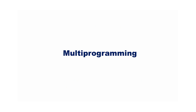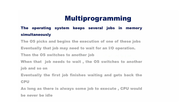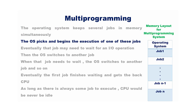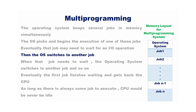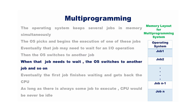Multiprogramming was introduced in order to increase CPU utilization. The operating system keeps several jobs in memory simultaneously and picks one to begin execution. Eventually, that job may need to wait for an input-output operation, then the operating system switches to another job. When that job needs to wait, the operating system switches to another job and so on.